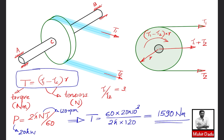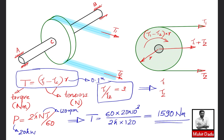Using two equations — T = (t1 − t2) × r and t1/t2 = 3 — we solve simultaneously. The pulley diameter is 200 mm, so radius r = 0.1 meter. Solving gives t1 = 23850 newton (tight side) and t2 = 7950 newton (slack side).